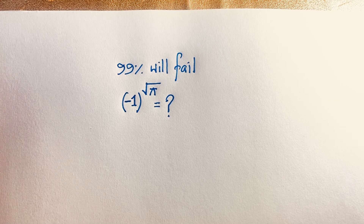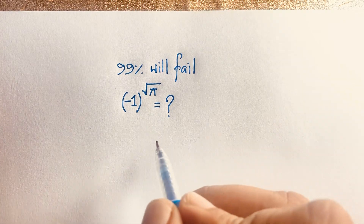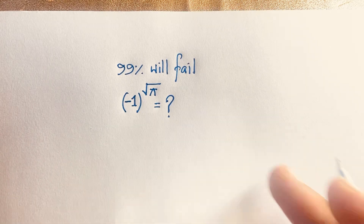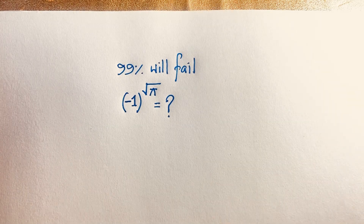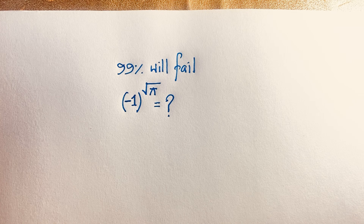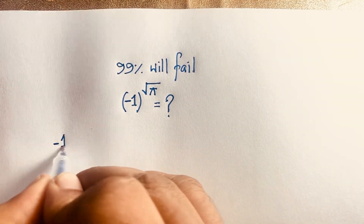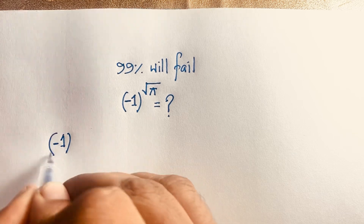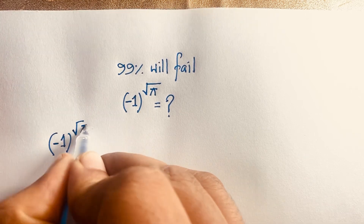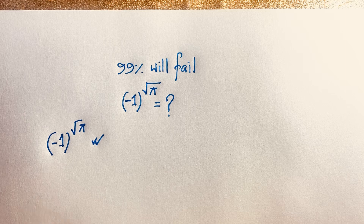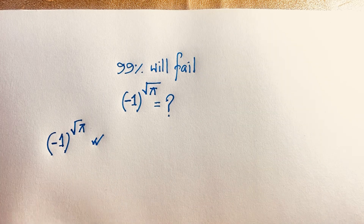Hello everyone. In this video we have solved a nice math question. This question is: minus one to the power square root pi is equal to what? How to solve this question? Our question is minus one to the power square root pi.